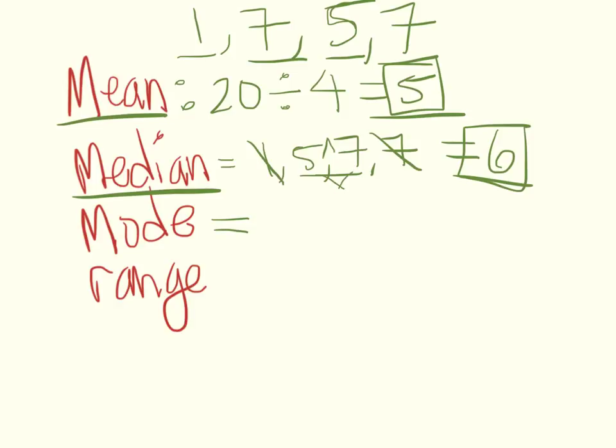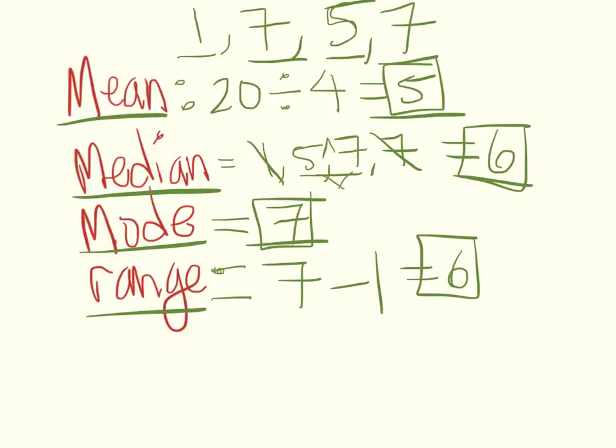Now our mode is the number you see the most. What number do you see the most? 1, 5, or 7? Hopefully you said 7. The range is the highest number minus the smaller number. So the larger number is 7 and our smallest number is 1. 7 minus 1 is 6, so our range is 6.